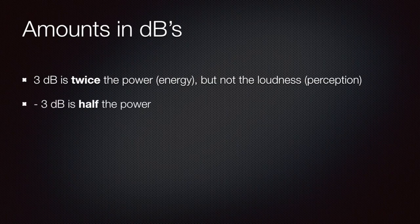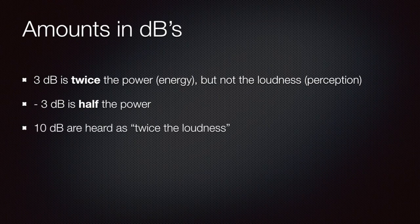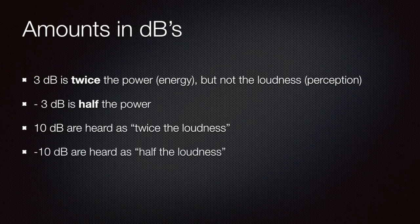Now, minus 3 dB would be half the power, but it's not half the loudness. We have to understand that our ear is not linear. So half the power is not half the loudness. It's a little strange at first to understand this. So if we want twice the loudness, then we need more dB. We need around 10 dB. 10 dB are heard as twice the loudness, and minus 10 dB would be around half the loudness.